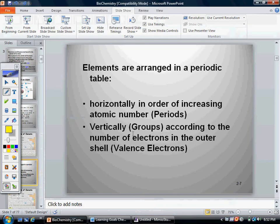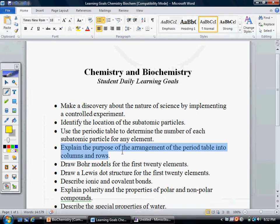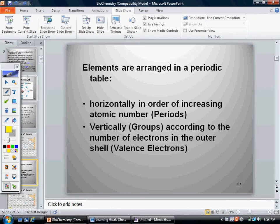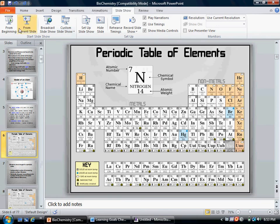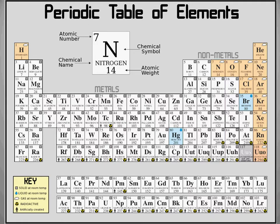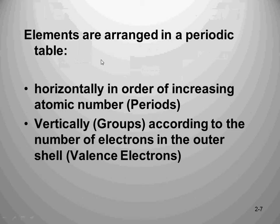All right, for chapter 2, we are going to look at the learning target that says to explain the purpose of the arrangement of the periodic table into columns and rows. There's a specific reason why the periodic table of elements is arranged the way it is. I'm going to use this slideshow to help illustrate the idea, and we'll start by talking briefly about the horizontal periods and the vertical groups.